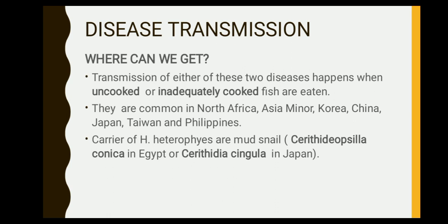So how is this transmitted from one organism to another, and where can we get this disease? Transmission occurs when uncooked or inadequately cooked fish are eaten. These are freshwater fish commonly found in North Africa, Asia Minor, Korea, China, Japan, Taiwan, and even here in the Philippines, where it is a common disease.